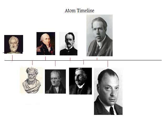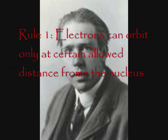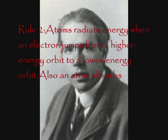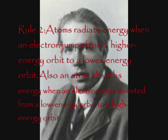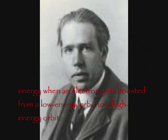The next two guys on my timeline are Bohr and Pauli. In 1912, Bohr made a theory that said electrons do not spiral into the nucleus, and then he made rules about what does happen. Rule 1: electrons can orbit only at certain allowed distances from the nucleus. Rule 2: atoms radiate energy when an electron jumps from a higher energy orbit to a lower energy orbit, and an atom absorbs energy when an electron gets boosted from a lower energy orbit to a higher energy orbit. Bohr also made a model that showed the electrons going around the nucleus.